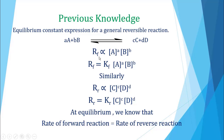Since reversible reactions have two reactions — one forward reaction and one reverse reaction — according to the law of mass action, rate of forward reaction is directly proportional to concentration of A raised to power a, into concentration of B raised to power b. Then rate of forward reaction is equal to KF times concentration of A times concentration of B, where KF is the rate constant for forward reaction.